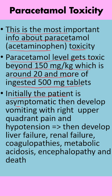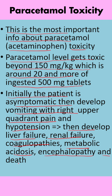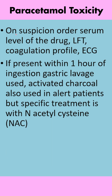Then the patient develops vomiting with right upper quadrant pain and hypotension, then liver failure, then renal failure, coagulopathies, metabolic acidosis, encephalopathy, and death. On suspicion of this toxicity, you order serum levels of the drug.